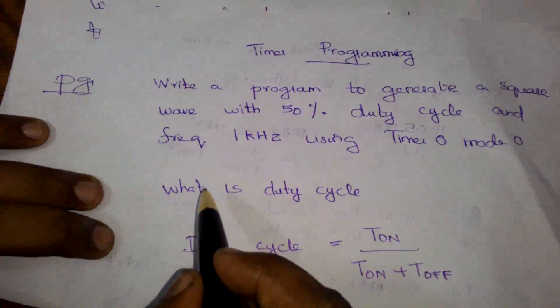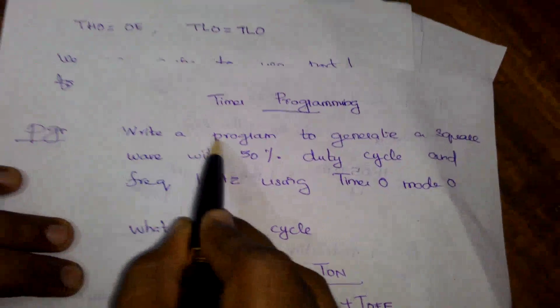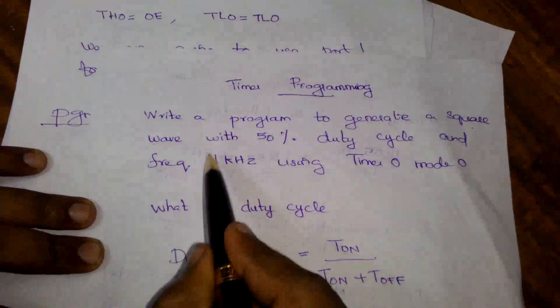I am Arun and I am going to explain timer programming so you will be able to understand how to generate a square wave using a timer. We are going to use Timer 0 in Mode 0 to generate a delay, so the square wave will be generated using the timer. Here you can see the question: write a program to generate a square wave with 50% duty cycle.